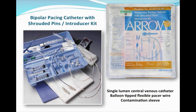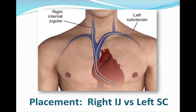Prior to putting in the pacer, we need to gather all of our supplies. One of those is the temporary pacing catheter with the shrouded pins and introducer kit. The kit has not only the pacing catheter, but it's like a central line — it has the introducer with the side port and the contamination sleeve. Ideally, placement is at the right internal jugular vein.